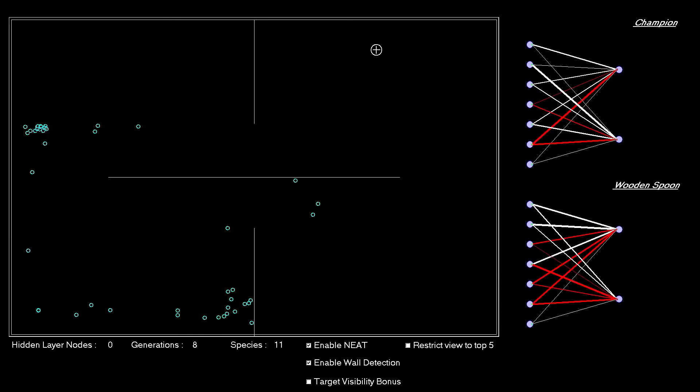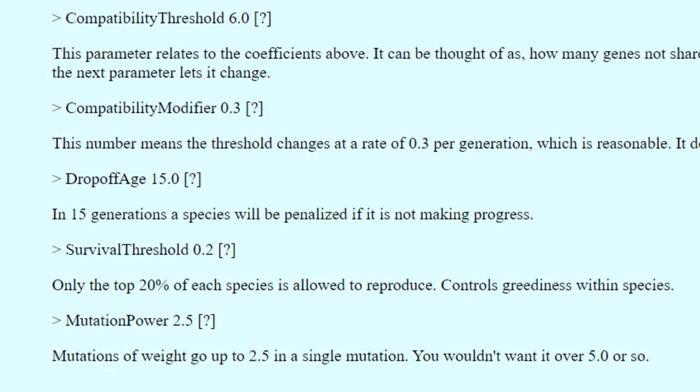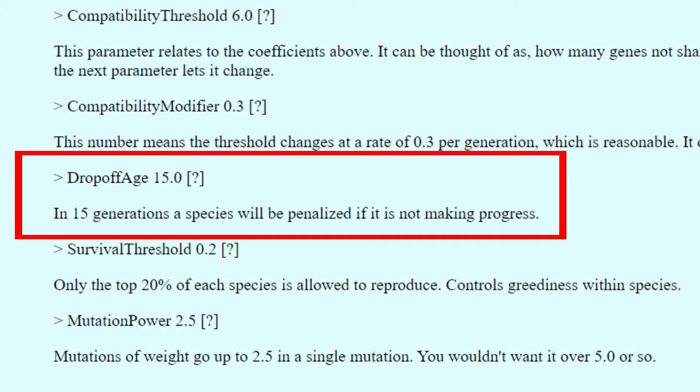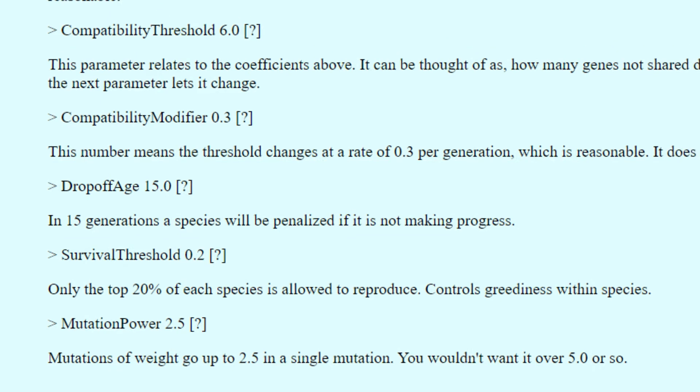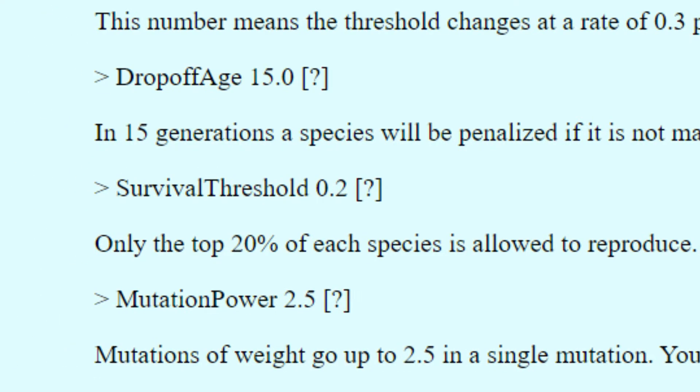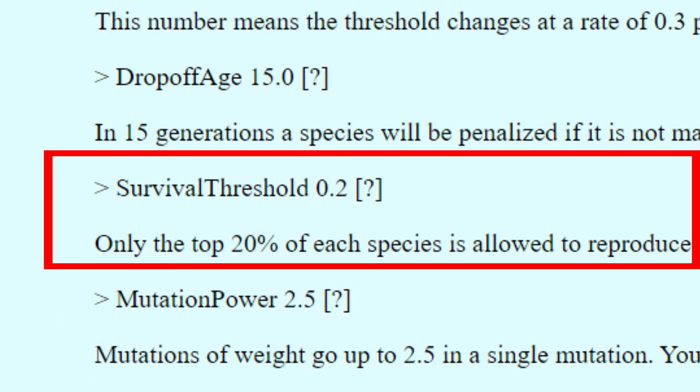First up is the approach he takes to species that are not improving. He gets rid of them. If a species hasn't improved in 15 generations, it will be penalized. He also has the concept of a survival threshold implemented. Only the top 20% of each species is allowed to reproduce.